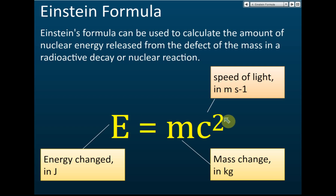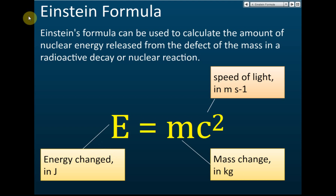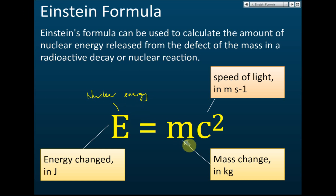The amount of energy can be calculated using Einstein's formula: E equals mc squared. E is the energy change — this is nuclear energy. Nuclear energy equals the mass change, which is the mass defect, multiplied by the square of the speed of light.